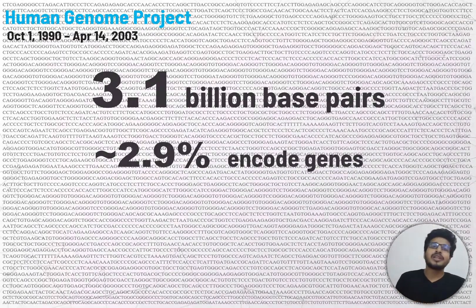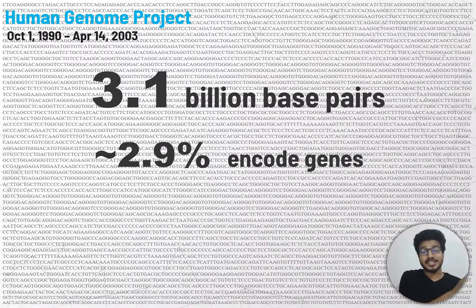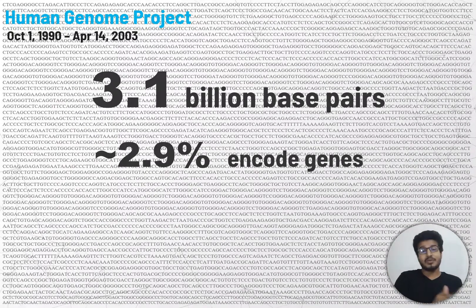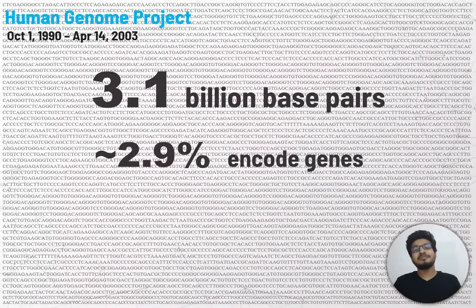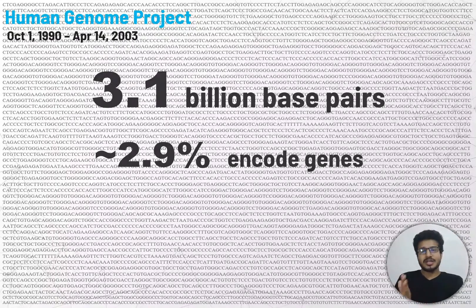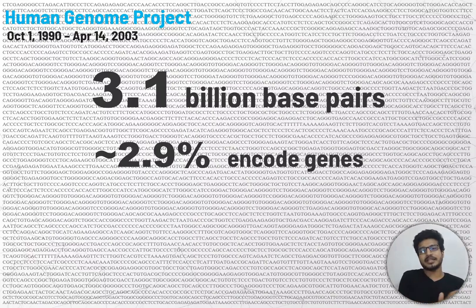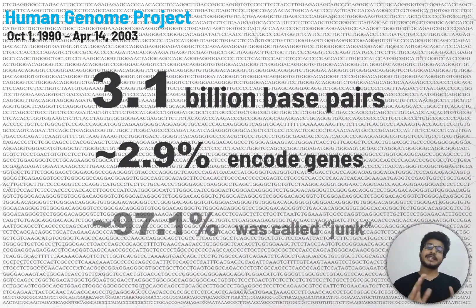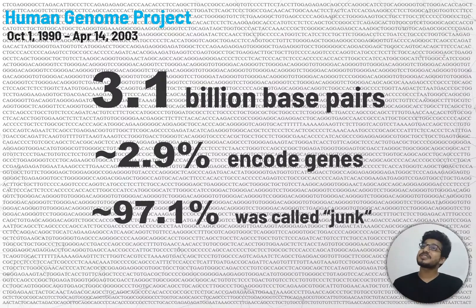We have only 2.9% of the data that is coding. Of the 3.1 billion base pairs, only 2.9% actually codes for genes. So the work flow shows that 97.1% of the genome is non-coding.